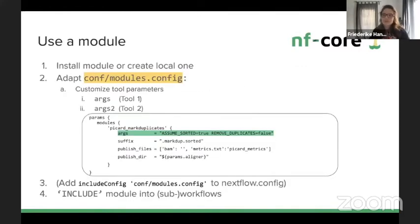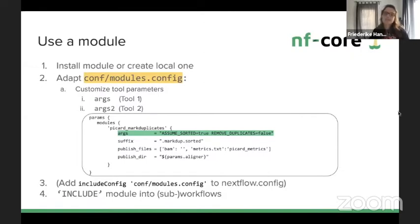To use a module, you install it or create a local one, then adapt the conf/modules.config. This is where sharing becomes powerful — you can use the same software but specify pipeline-specific parameters. For example, for MarkDuplicates, you specify exactly which parameters should be used. Some modules have an args and args2 line because, for example, for mapping, samtools is run afterwards within the same module — args for BWA and args2 for SAMtools.